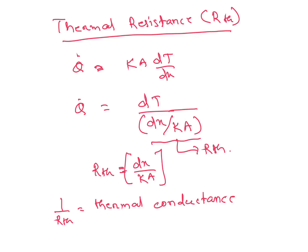Then thermal diffusivity, denoted by alpha. Heat conducted by heat capacity or heat stored. K by rho Cp. Its unit is meter square per second.